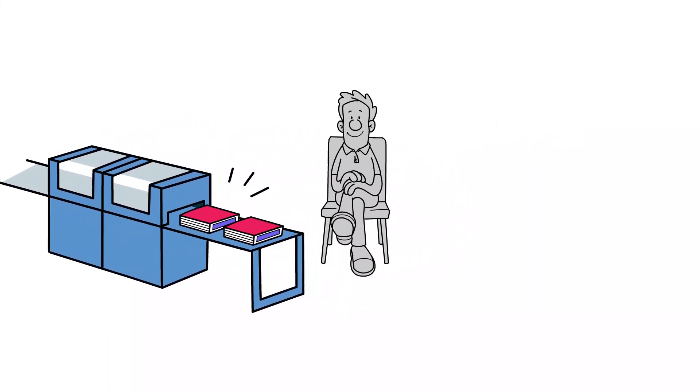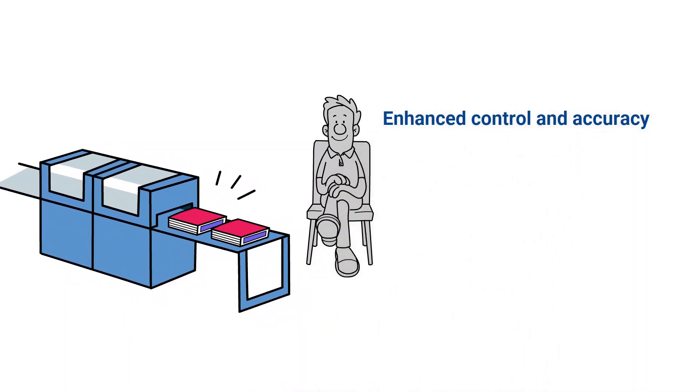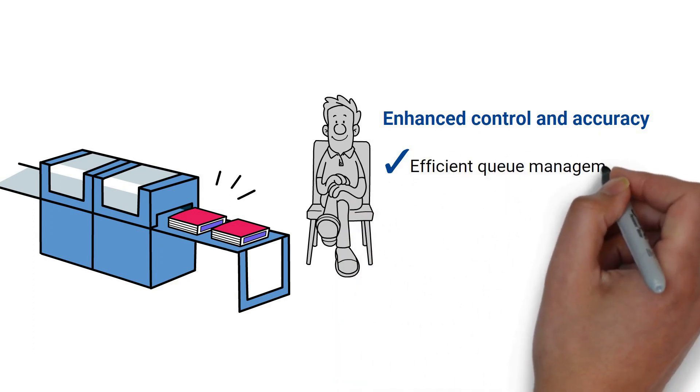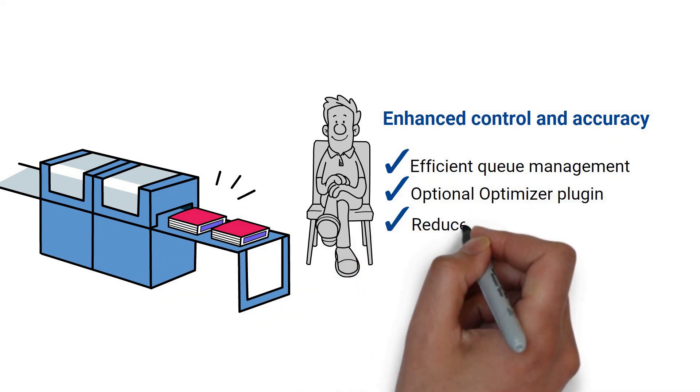Connex Line Control grows with your business needs. Various add-ons help you to further automate your production. With the optional optimizer plugin, Connex Line Control groups and optimizes your job order based on selectable sorting criteria.